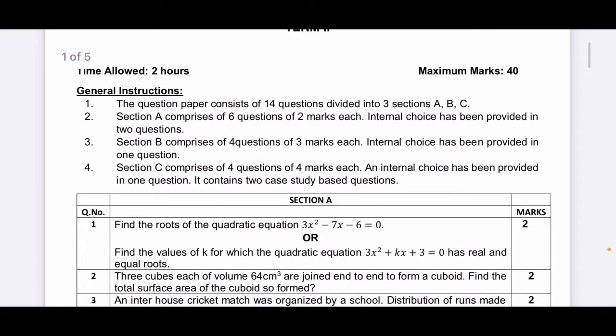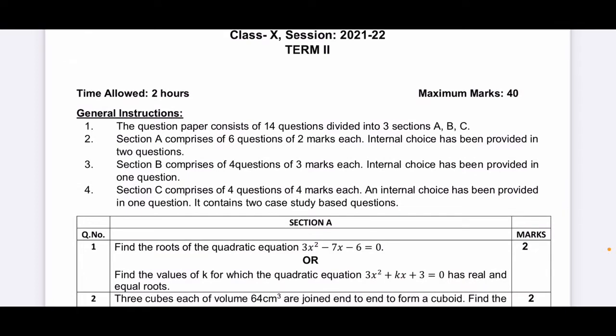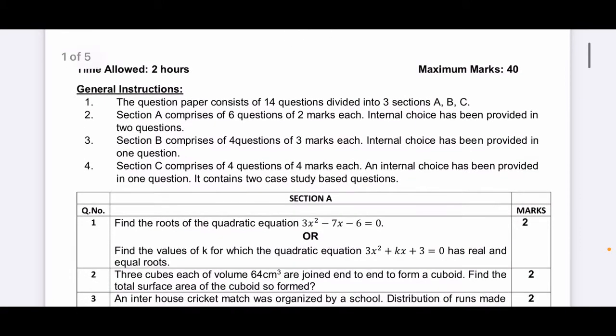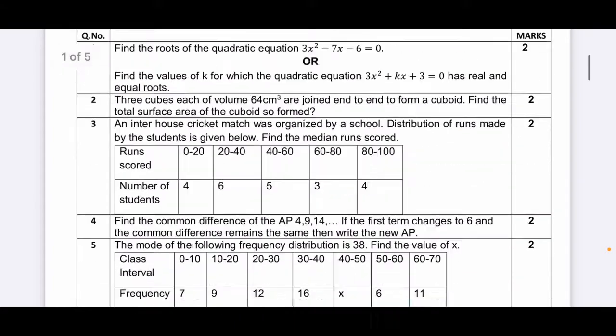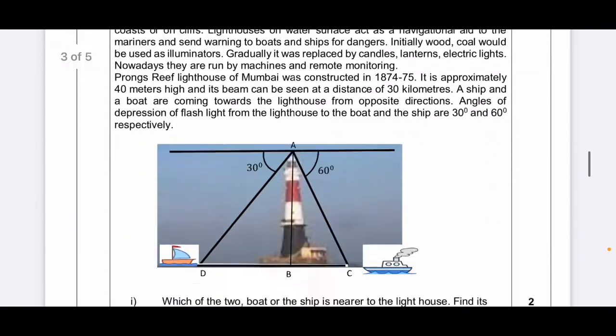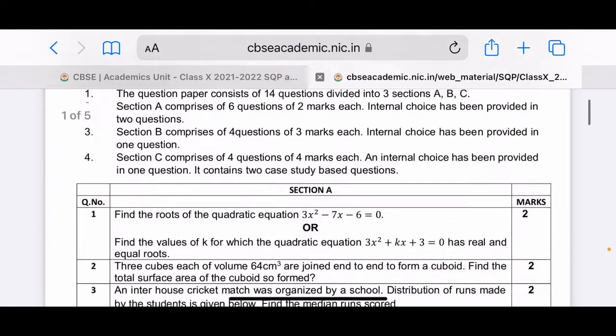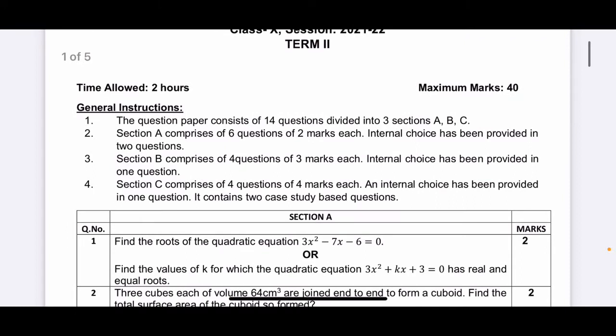Now we will see the pattern. First of all, you will see maximum marks are 40, as we already know. Now we will see general instructions in Term 2 SQP. There are only 14 questions in the question paper. The question paper consists of 14 questions divided into 3 sections A, B, and C. Section A comprises of 6 questions of 2 marks each, and you will get internal choice in 2 questions.